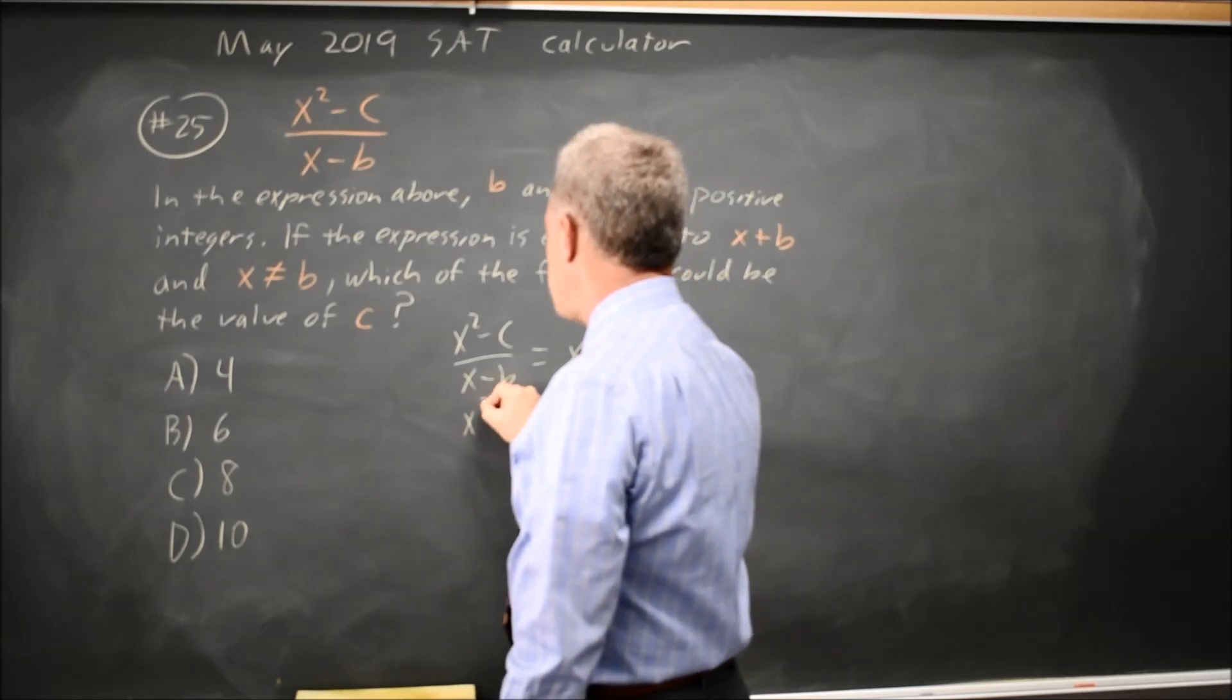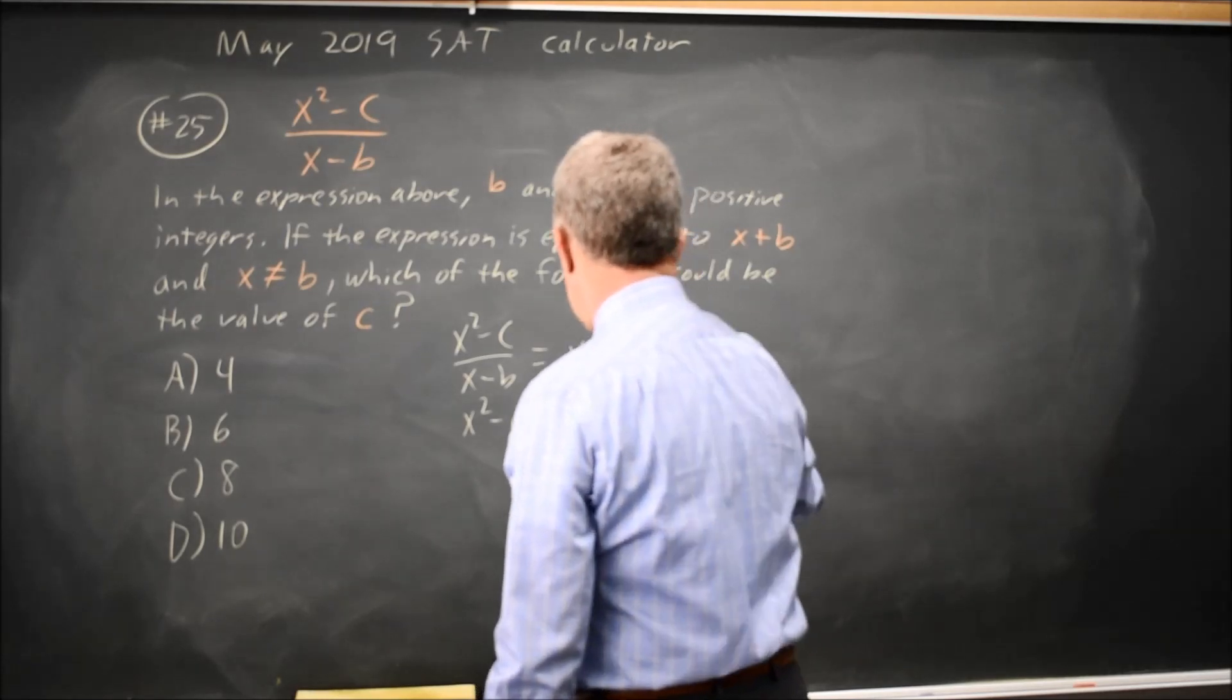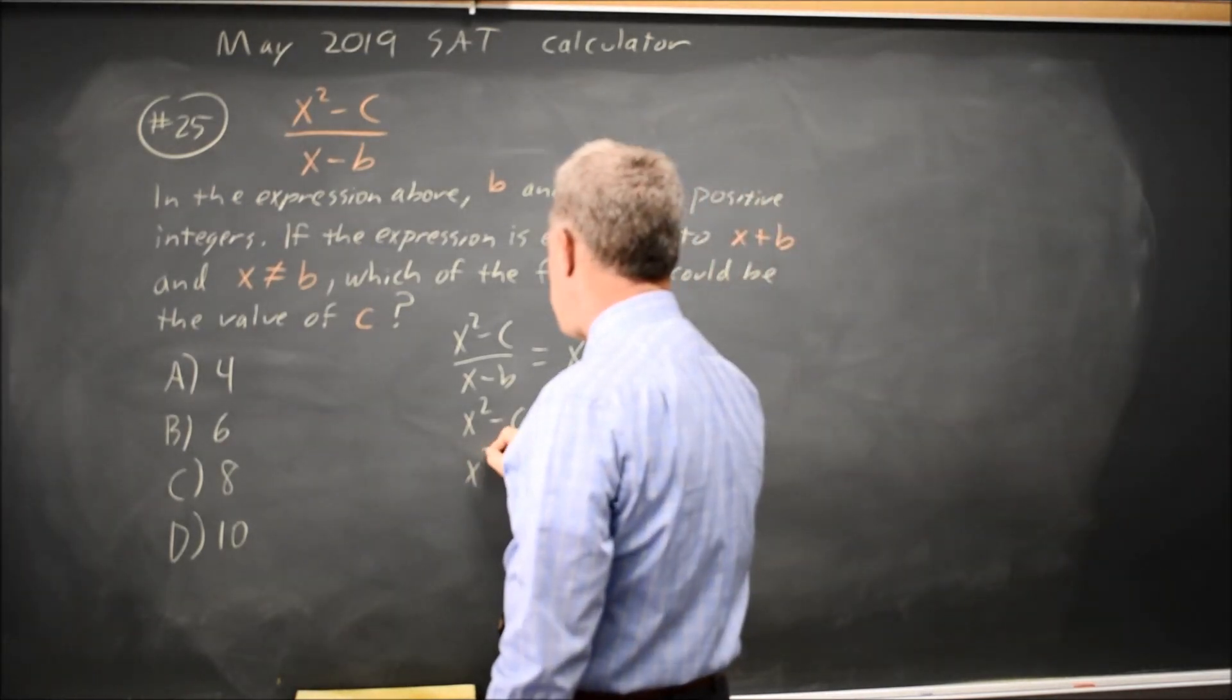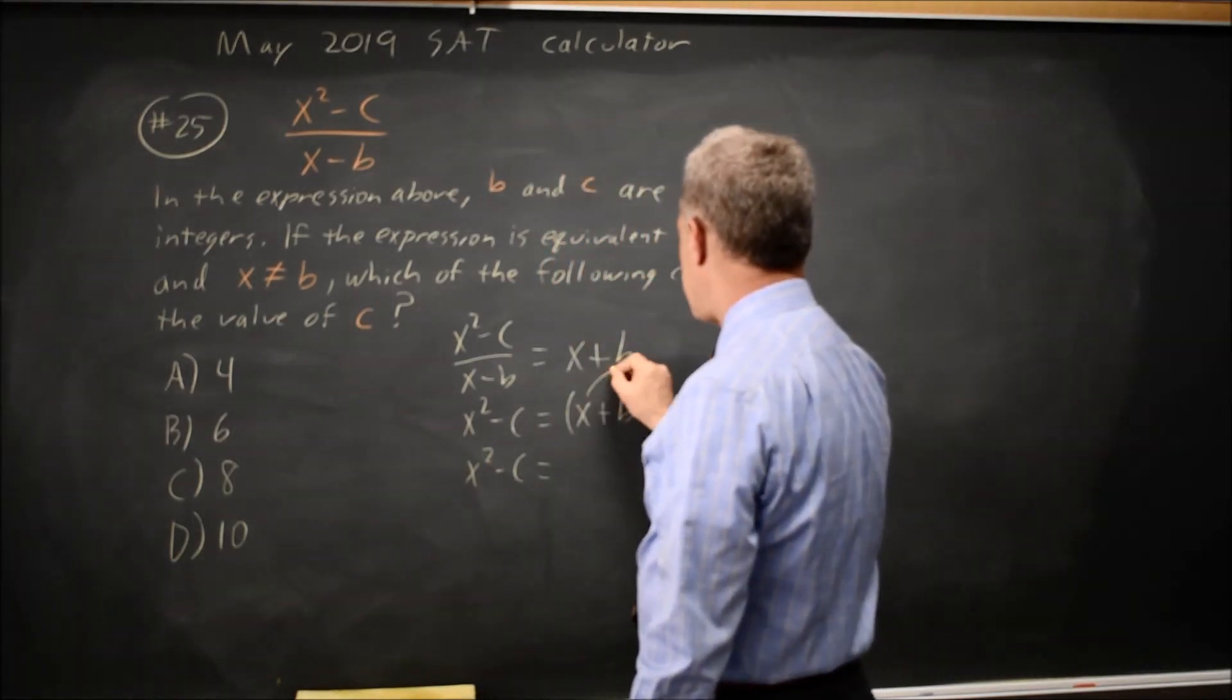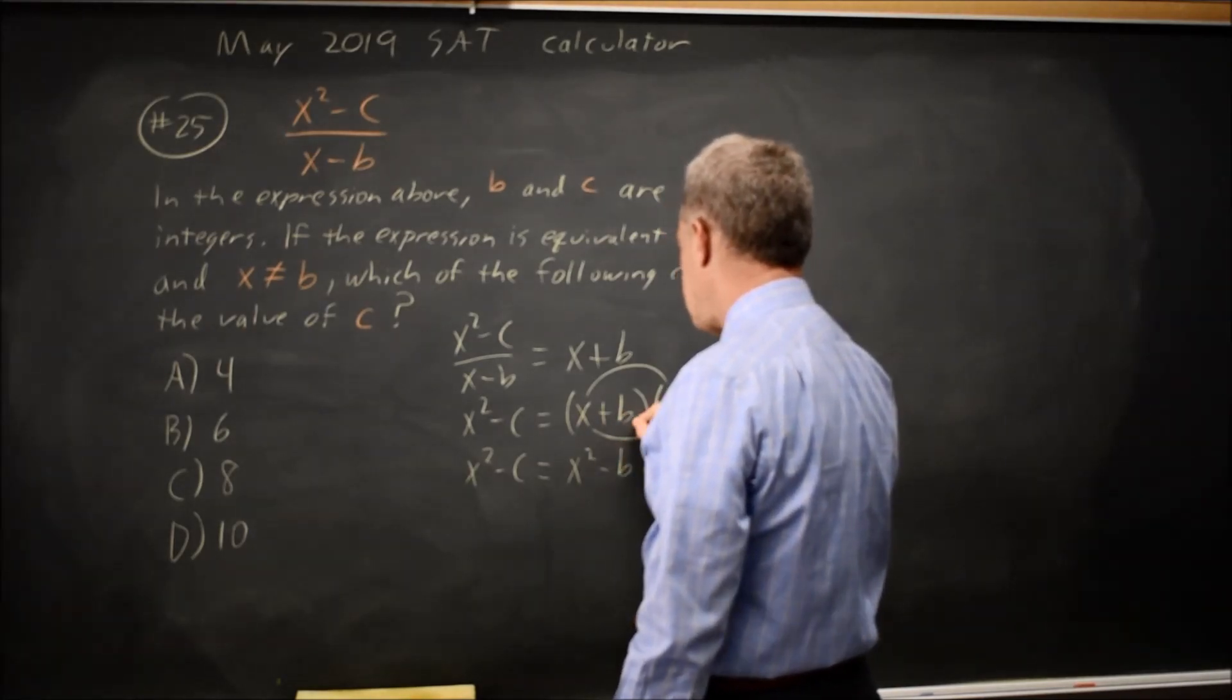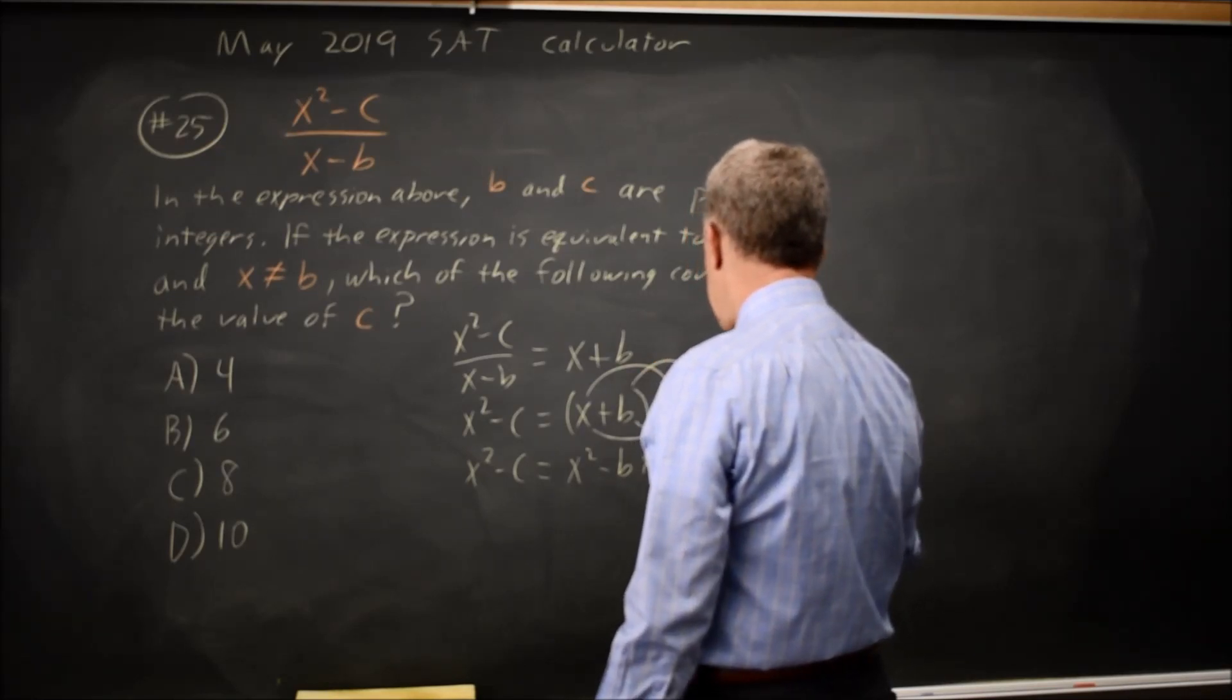So I'm going to multiply both sides by x minus b. And the right-hand side is a special product that we recognize. If you multiply first times first, that's x squared. Outside is minus bx. Inside is plus bx. And last is minus b squared.